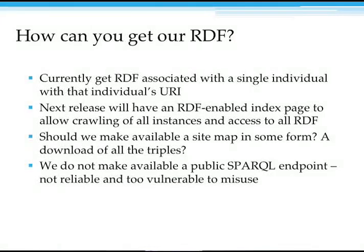One of the questions is, should we make available some sort of a site map for our RDF information? Should we just make available a nightly snapshot that lets people download everything we have to say about Cornell? We do not make available a public SPARQL endpoint. SPARQL, if you're not familiar with it, is like SQL for the Semantic Web. SPARQL endpoints are easy to make queries of that can cause lots of problems — they're not that reliable and too vulnerable to make broadly available.